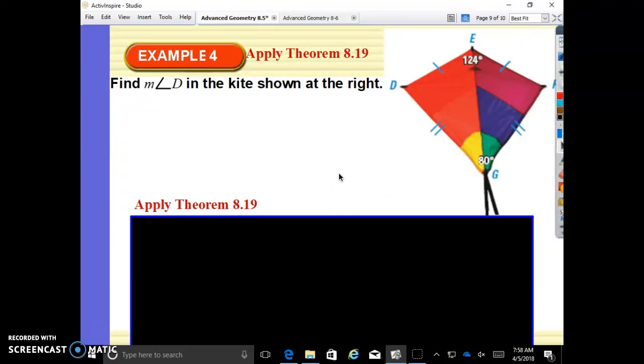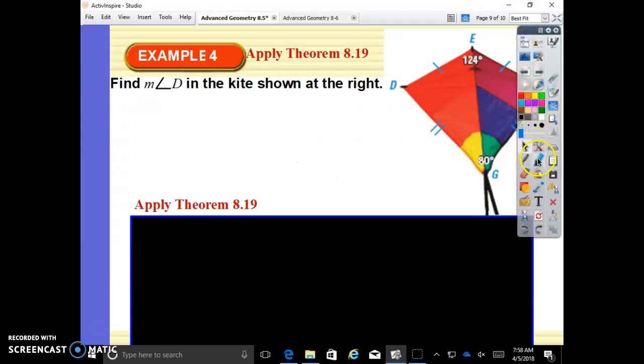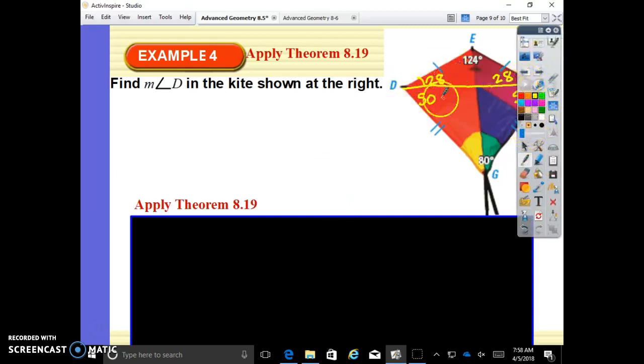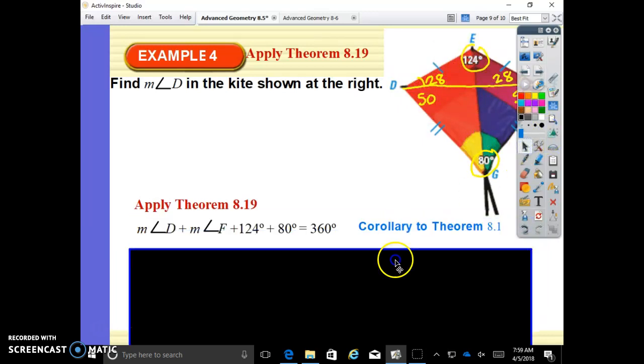Find the measure of angle D in the kite shown at the right. So on this guy, we're going to go like this. This is an isosceles triangle. The base 2 angles are equal. 180 minus 124 is 56. 56 divided by 2 is 28 and 28. Another isosceles triangle. The base 2 angles are equal. 180 minus 80 is 100. Divide by 2 is 50 each. So 78. Another way you could have done this is it's a quadrilateral. 4 minus 2 is 2, times 180 is 360. 360 minus 80 minus 124 divide by 2 and you would get 78 each. So there's a couple different ways.